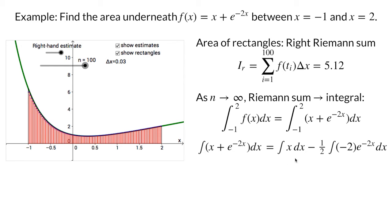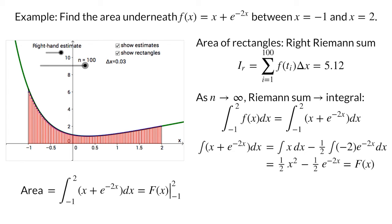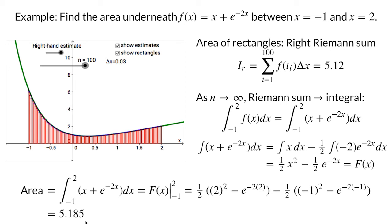Let's separate the integral into its two terms. To make the second integral easier, we multiply and divide by negative 2. We take the integral of x to get one half x squared. The integral of negative 2 times the exponential is the exponential itself, so the second term is negative one half times the exponential. This function is our antiderivative big F of x. We didn't need to add an arbitrary constant c here because we are computing a definite integral. By the fundamental theorem of calculus, the definite integral defining the area under the curve is simply this indefinite integral F of x evaluated at x equals 2 minus the same F of x evaluated at x equals negative 1. We plug in those numbers to find that the area under the curve is approximately 5.185.